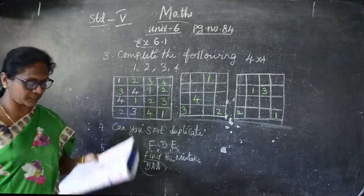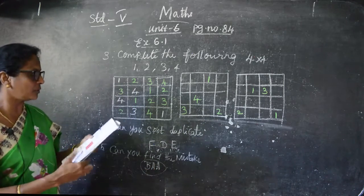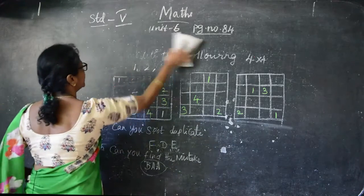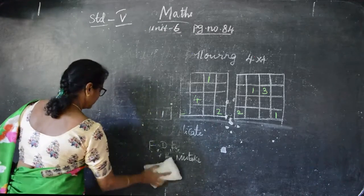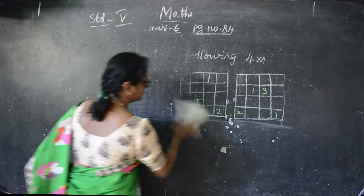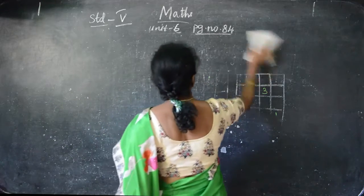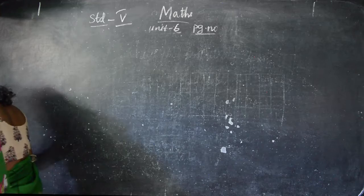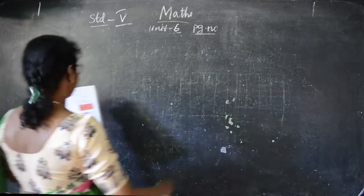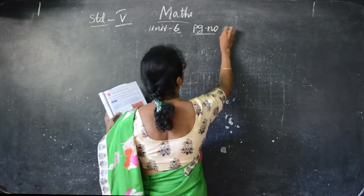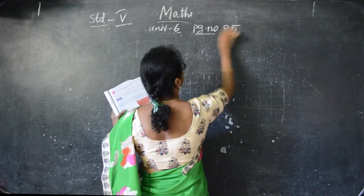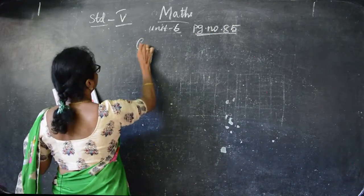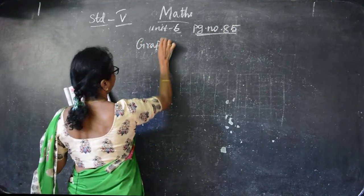So this exercise is over. Now we are going to see the graphical representation. Page number 85 - graphical representation of data.